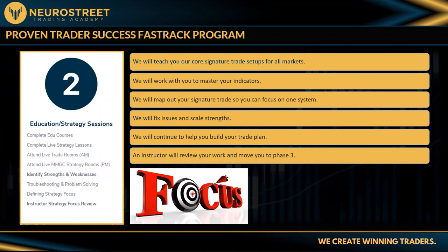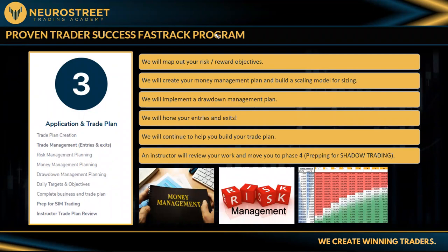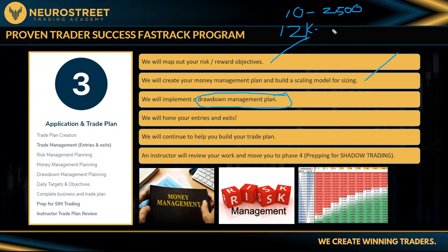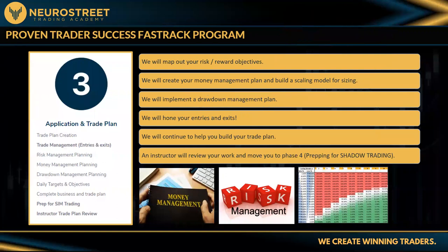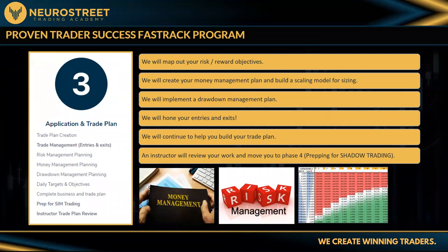Step three: you build out your entire trade plan — risk-reward, money management, drawdown management. Drawdown management is the number one factor. If you start with $10,000 and your max drawdown is $2,500, when your account grows to $12,000 that drawdown threshold needs to move up too. You need to know: I'm not going below this level. As your account balance hopefully grows, your drawdown floor moves up with it.